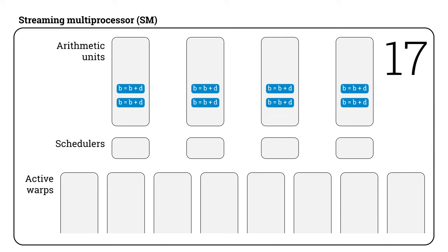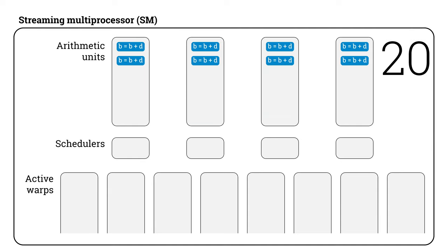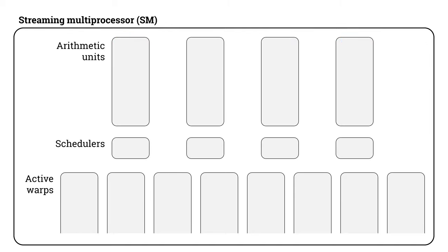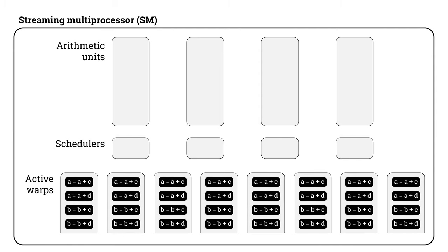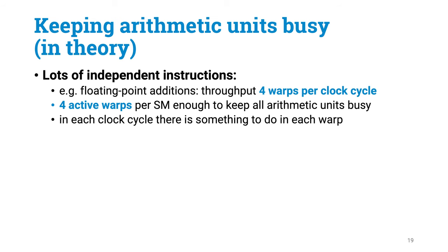When the threads of a warp finish execution, their resources are released, and once there is enough room in the SM, it can take another block from the queue and make it active. So what does all this mean? For example, if your code is just doing a whole bunch of additions and you want to keep the arithmetic units busy — if you have only three warps per SM, it is not going to be possible. But if you have four warps per SM and your kernel has enough independent instructions in a row, you should be able to keep all arithmetic units busy.